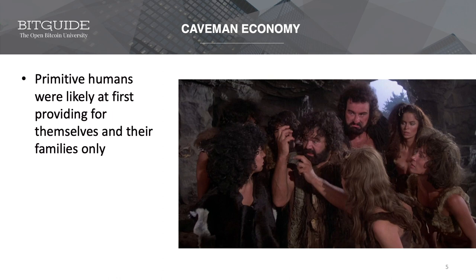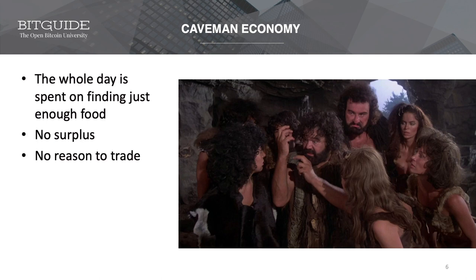Imagine a group of primitive humans living in caves whose primary concern is to feed themselves and survive. They spend the whole day trying to find food. Because food is scarce and they don't have advanced tools yet, if they're lucky, by the end of the day they would have found just enough food to survive. They have no surplus. As a result, there's no need to trade — no one has any accumulated extra to exchange with other people.